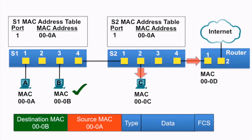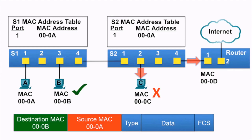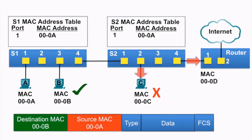PCC receives the Ethernet frame, but its MAC address does not match the destination MAC address of the Ethernet frame, so it does not accept the rest of the frame. The router also receives the Ethernet frame, examines the destination MAC address against its own MAC address, notices that it is not a match, and does not receive the rest of the frame.